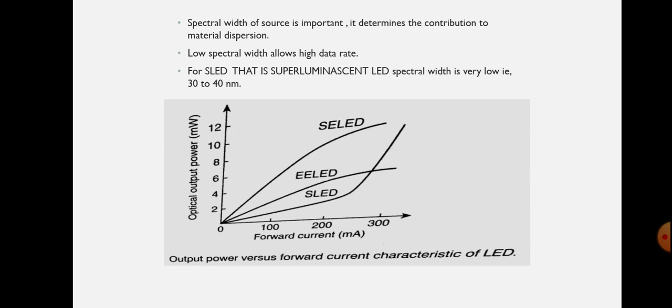For the superluminescent LED, the spectral width is very low at 30 to 40 nm. The figure also shows the output power versus forward current characteristics of the LED.